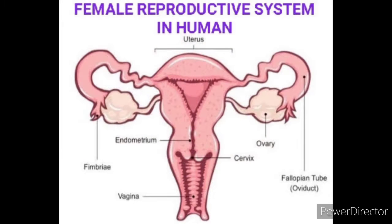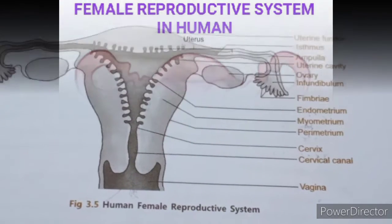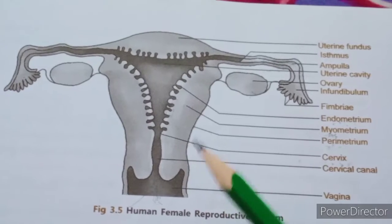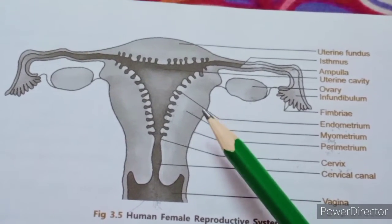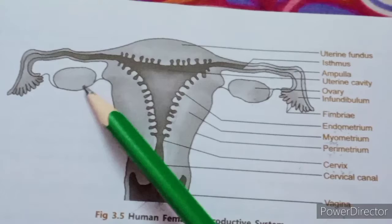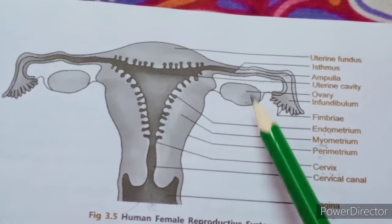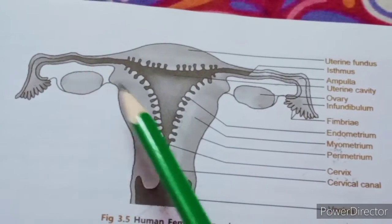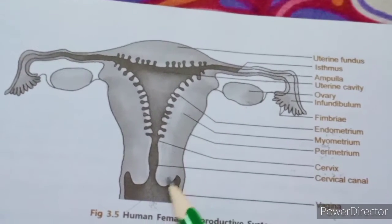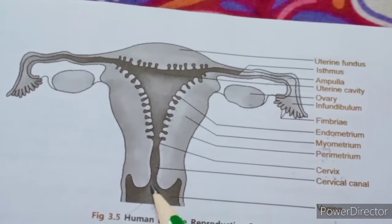Hello students, welcome to our channel. Now I'm going to explain the female reproductive system in humans. The parts are: a pair of ovaries, a pair of fallopian tubes, a single uterus, the mouth of the uterus called the cervix, and the passage leading to the vagina.